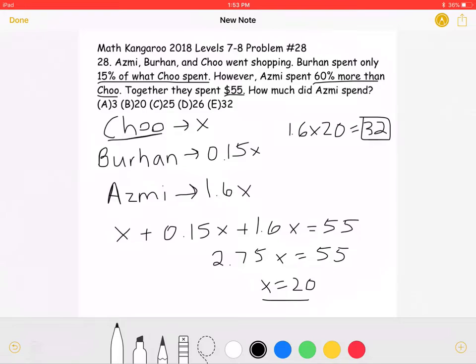This means that answer choice E is correct. Asmi spent $32.